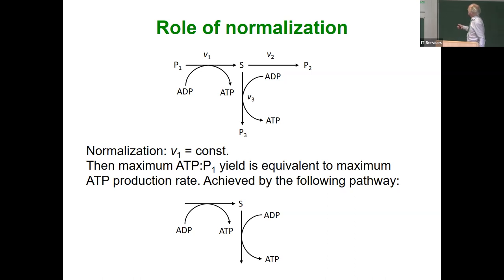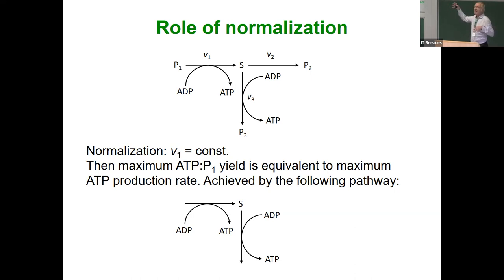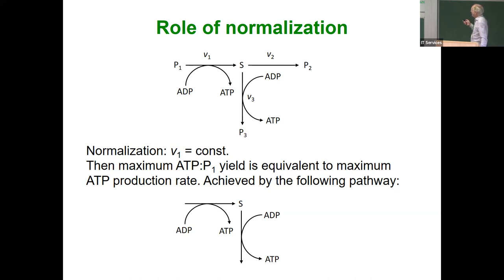Also in elementary mode analysis and FBA, we observe that in the optimal state some enzymes are not used — some reactions have rate zero — because the optimum is reached on the boundary of the admissible flux region. This is a question of whether this is true in living cells. If the denominator (input rate) is normalized to one, then maximizing the ratio is the same as maximizing the numerator.